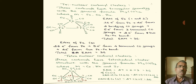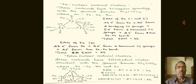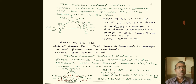Coming to the tetranuclear carbonyl cluster: these carbonyls have tetrahedral cluster structure with the general formula M4(CO)12, where M is cobalt, rhodium, or iridium. In the case of cobalt, it is called tetracobalt dodecacarbonyl, which contains four cobalt atoms labeled 1, 2, 3, 4.